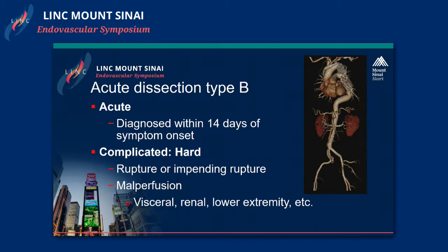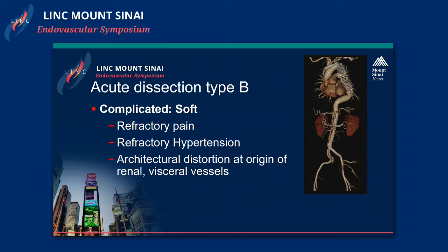The hard complications patients typically present with in acute dissections are rupture or impending rupture. A patient will keep complaining of chest pain, and they can also develop malperfusion to the visceral, renals, or lower extremities. Softer complications include refractory pain where blood pressure control has not helped with the dissection, refractory hypertension, and involvement of renal and visceral vessels.